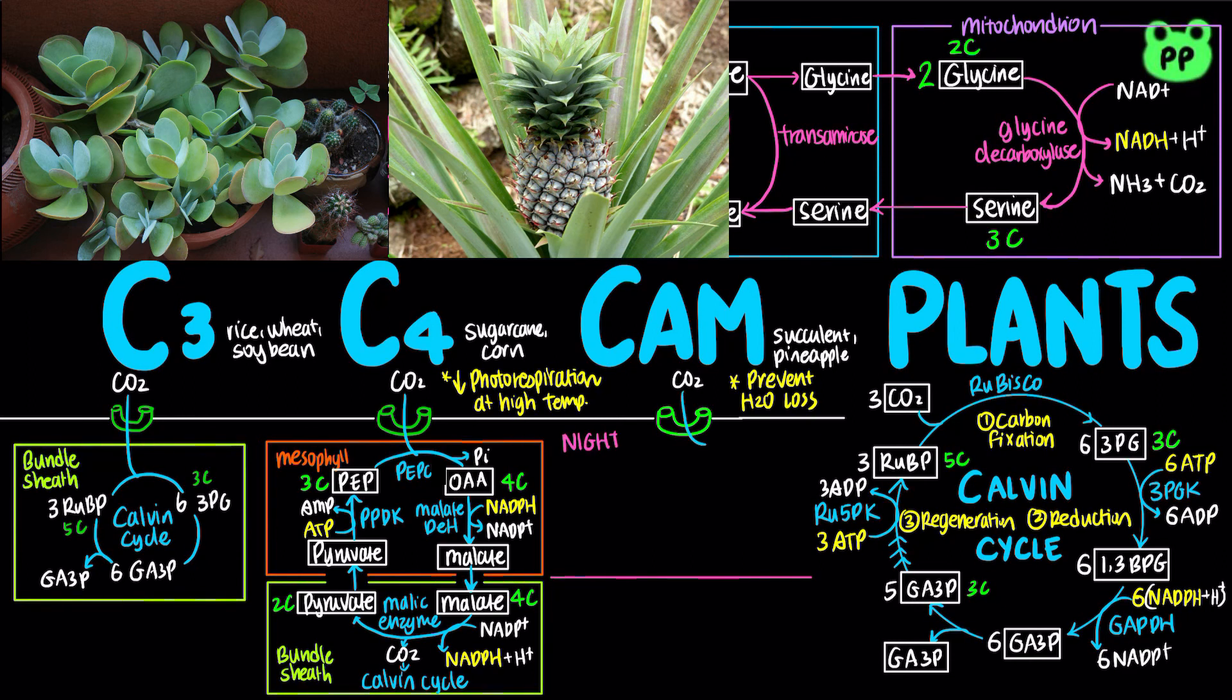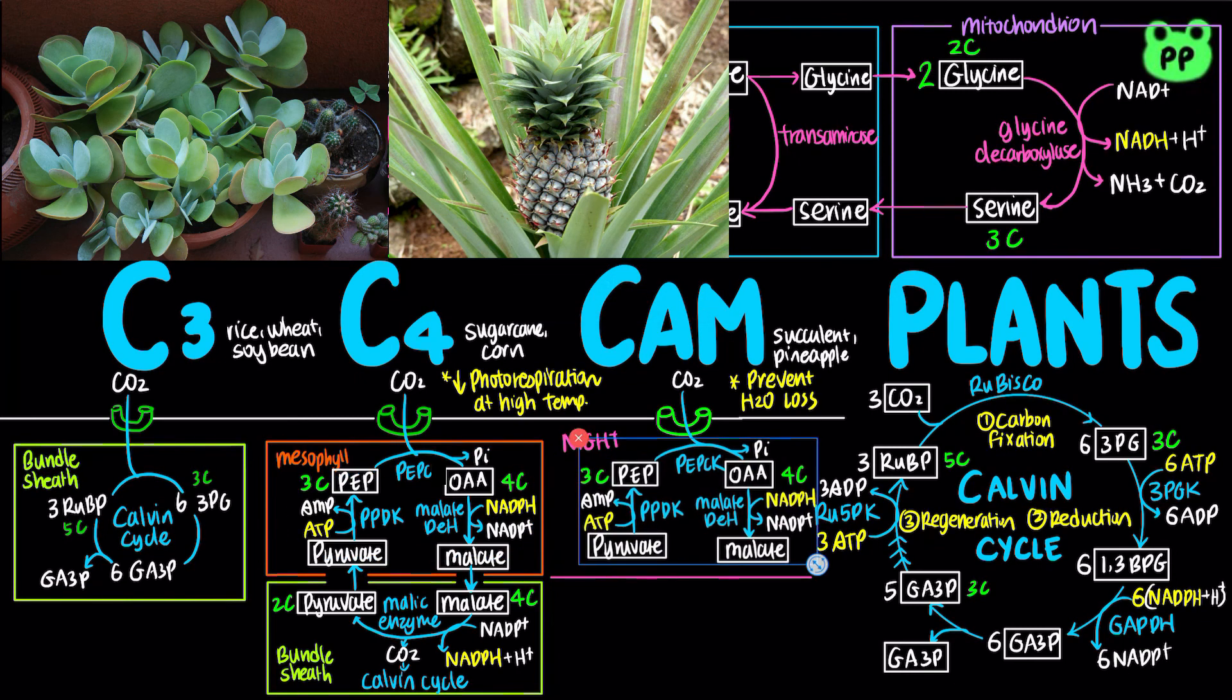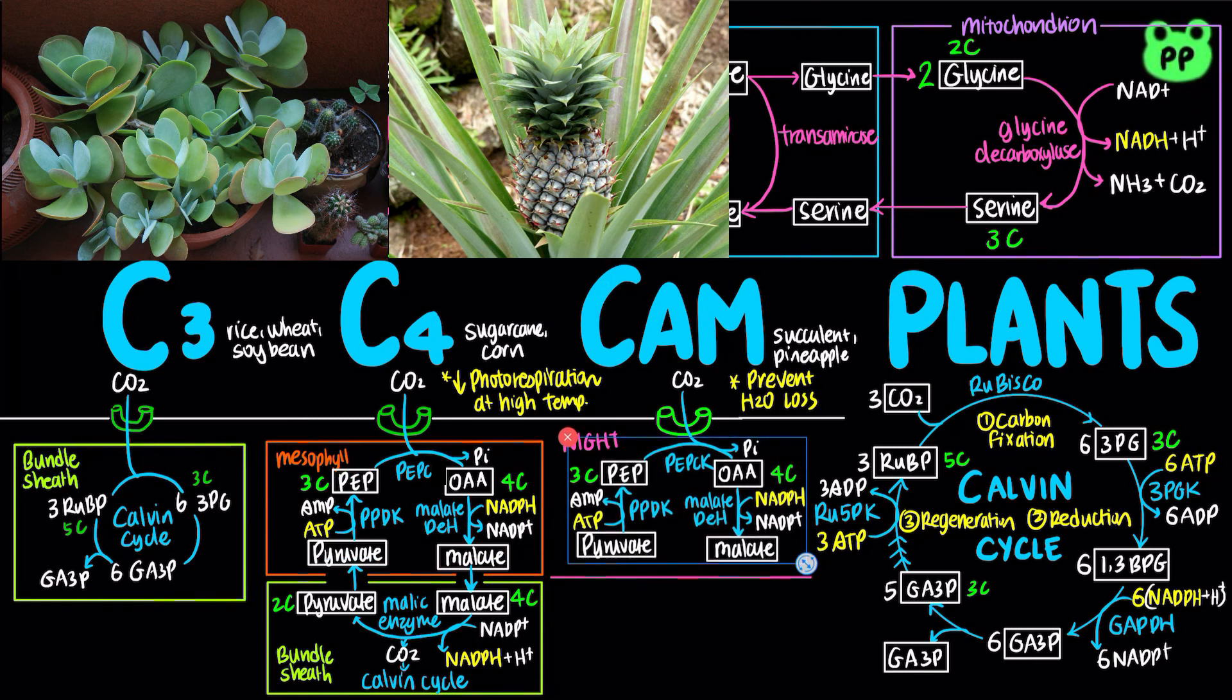At night, when the air is cooler and moister, the stomata is open to allow entry of carbon dioxide, which is fixed into oxaloacetate by phosphoenolpyruvate carboxylase. Oxaloacetate is subsequently reduced to malate and stored in the vacuoles.